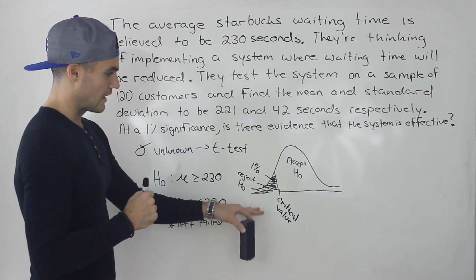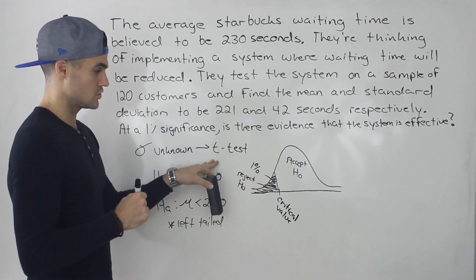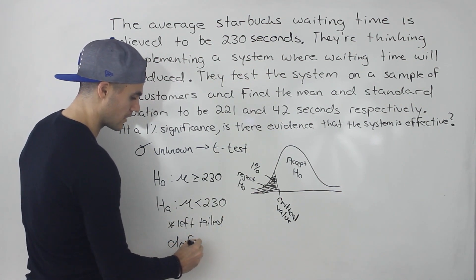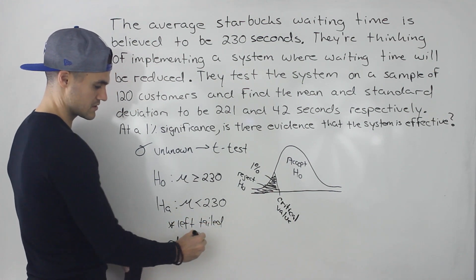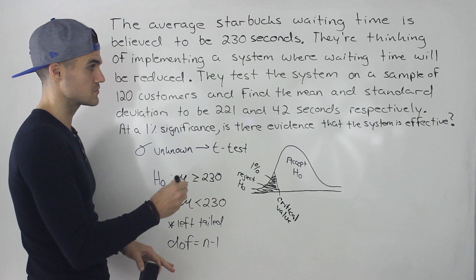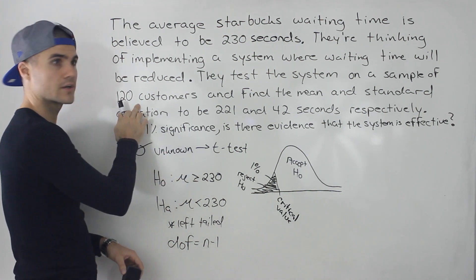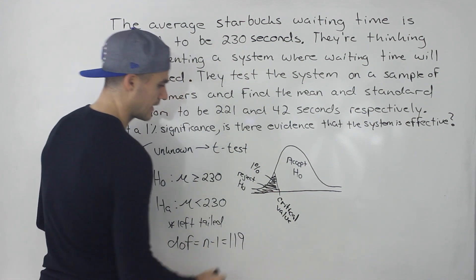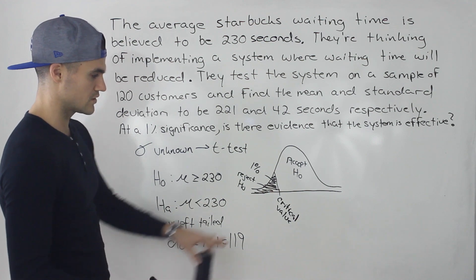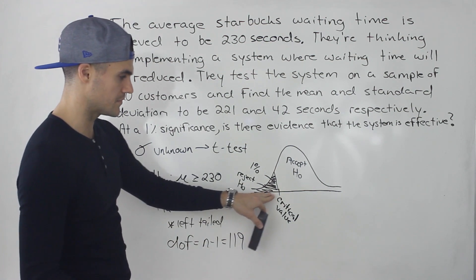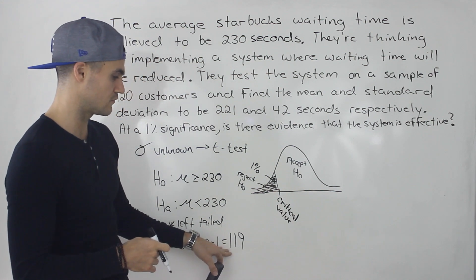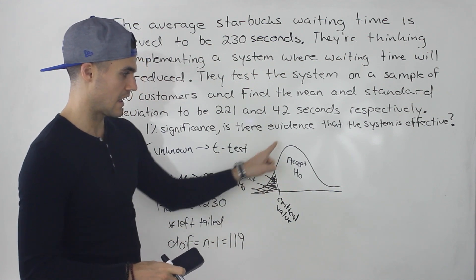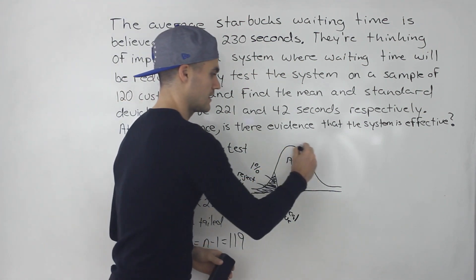To get the critical value, we're using a t-distribution. First, we need the degrees of freedom. Degrees of freedom is always n minus 1. Since we took a sample of 120 customers, that's 120 minus 1, which gives us 119. So we want the t-value on the t-distribution with 119 degrees of freedom where the left-tailed area is 1%.